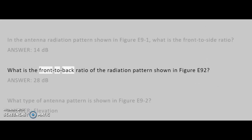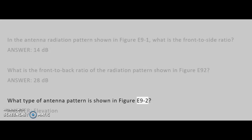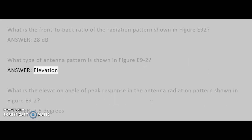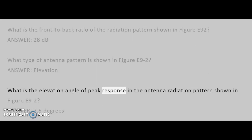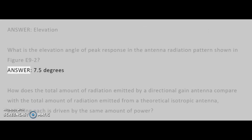What is the front-to-back ratio of the radiation pattern shown in figure E9-2? Answer: 28 dB. What type of antenna pattern is shown in figure E9-2? Answer: elevation. What is the elevation angle of peak response in the antenna radiation pattern shown in figure E9-2? Answer: 7.5 degrees.